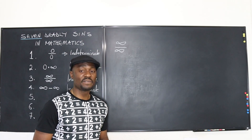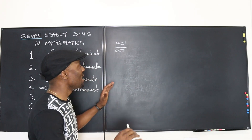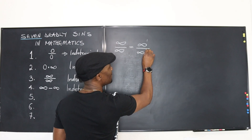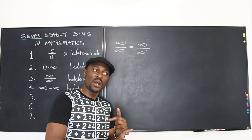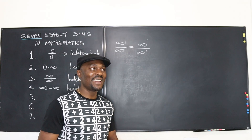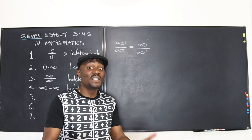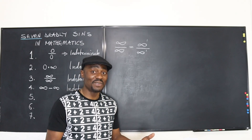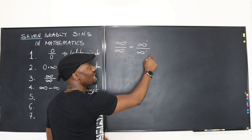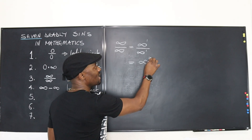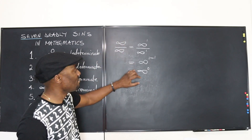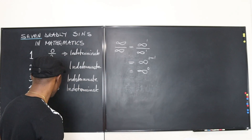Let's go back to infinity over infinity and see what else can come out of it. We could write this as infinity to the first power divided by infinity to the first power, because anything raised to the first power is itself. Now, by the law of exponents, when you're dividing with the same base you subtract the exponents — so it's one minus one — giving us infinity to the zero power. As you can see, infinity over infinity became infinity to the zero, and that is sin number five — another indeterminate form.